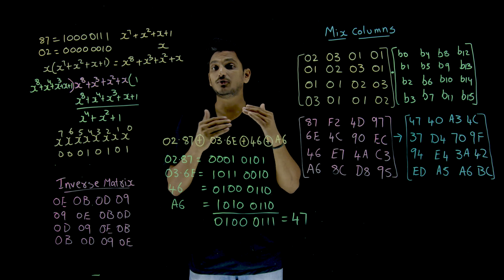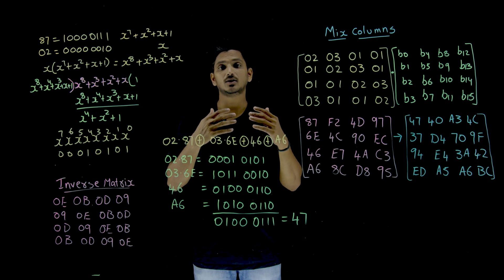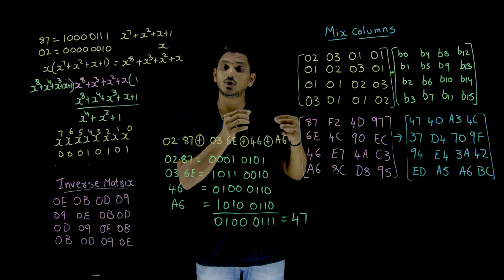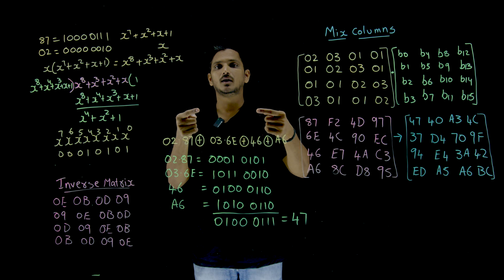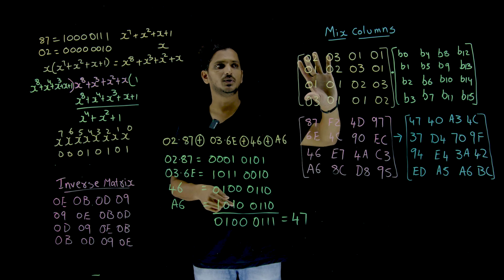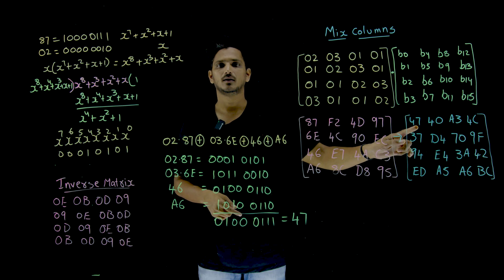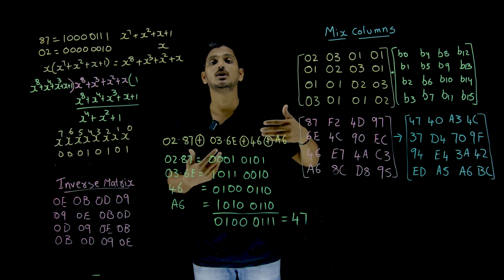See, during the confusion and diffusion, what we have discussed, we are discussing that one bit in the ciphertext is going to depend on multiple bits on the input. See here, matrix multiplication means on all this column, it is going to depend. That is how mixing columns provides the confusion and diffusion in our AES.